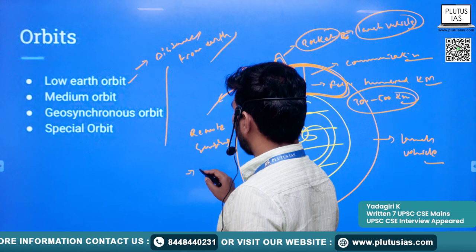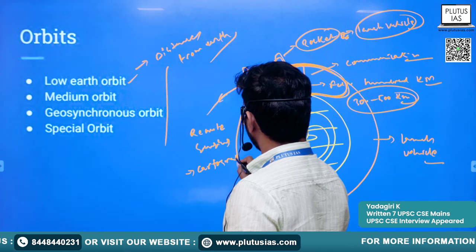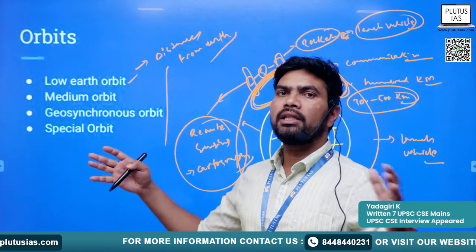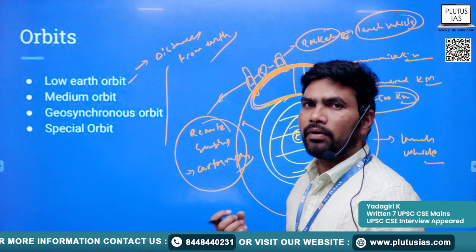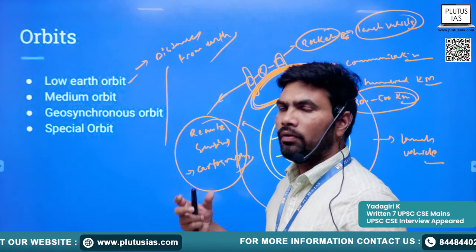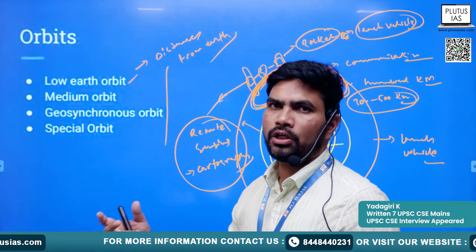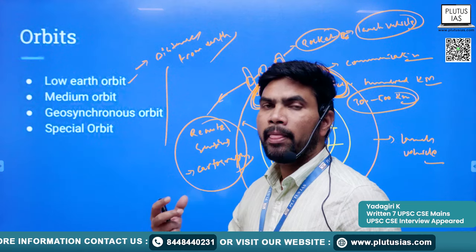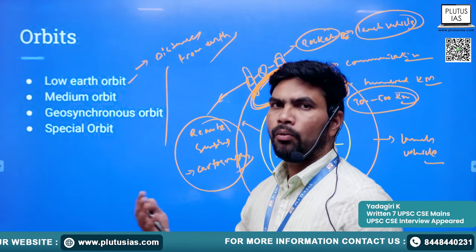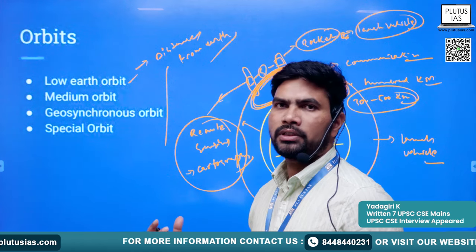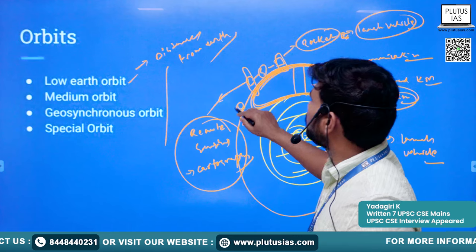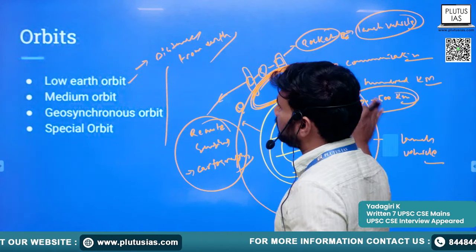Low earth orbit is useful for remote sensing and cartography — when there is no need to cover a wider area. These lower orbit satellites are very useful for surveying areas, for example with respect to agriculture, scouting for mineral resources, or finding out which regions in the ocean have more fish. In these types of applications, the low earth orbit proves very important.